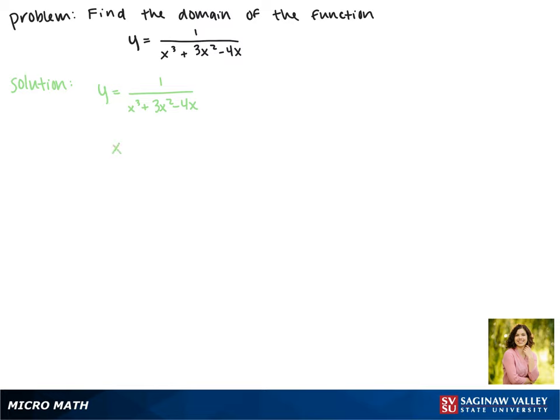So we're going to set our denominator not equal to 0. So we say x cubed plus 3x squared minus 4x is not equal to 0.